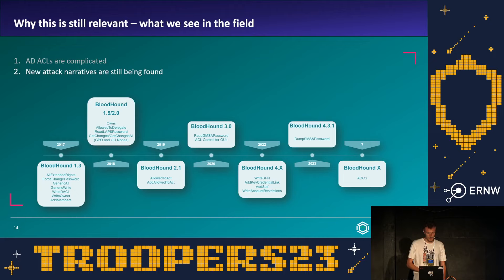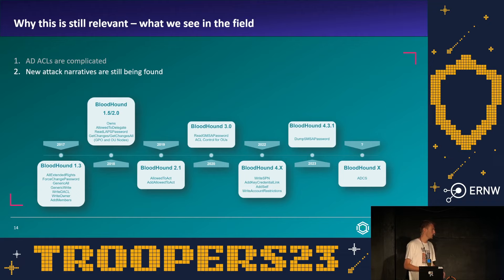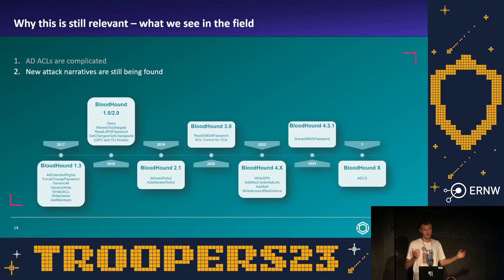Another reason these attack paths are still being found is that new attack narratives are constantly emerging. BloodHound is always behind on supported narratives because we can only add support after something is published. Here is the timeline of ACL-based edges BloodHound has added over the last six years. If an organisation used BloodHound to remediate all ACL-based attack paths three years ago, they might still be vulnerable today because support for many edges didn't exist back then. Continuous evaluation is very much needed.